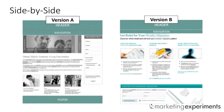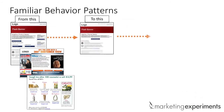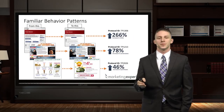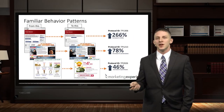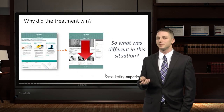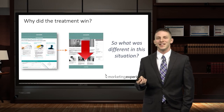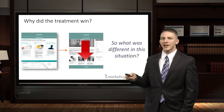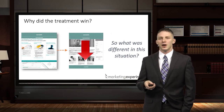Here are some familiar behavior patterns. In each of these examples we're eliminating multiple options — all in most cases equally weighted — in favor of one option, and those single options actually outperformed the multiple options. So my question is: what was different in this situation? What was different about this particular page? I'd like to answer that question in this clinic.